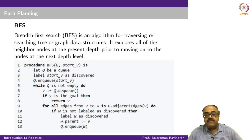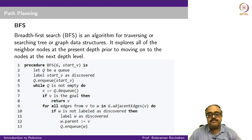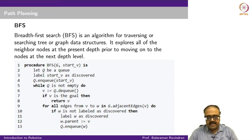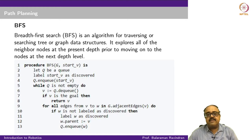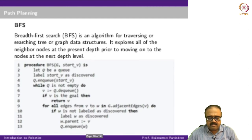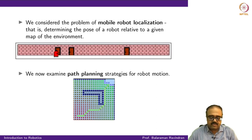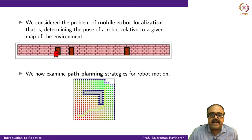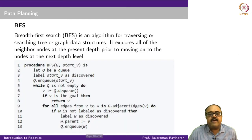The loop will end if the goal is found, or if all vertices in the graph have been explored with no more vertices to see. I will use the terms vertex and node interchangeably to denote a cell in the graph. Each cell in the free space becomes a node in the graph, and adjacent cells are connected by an edge. So I will say sometimes node, sometimes vertex — it is common terminology in computer science.